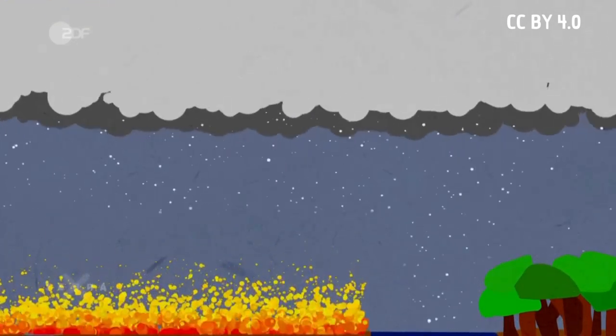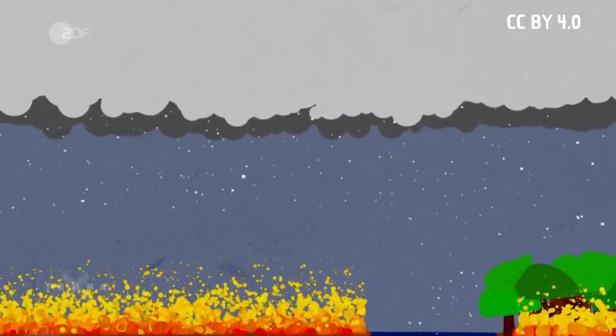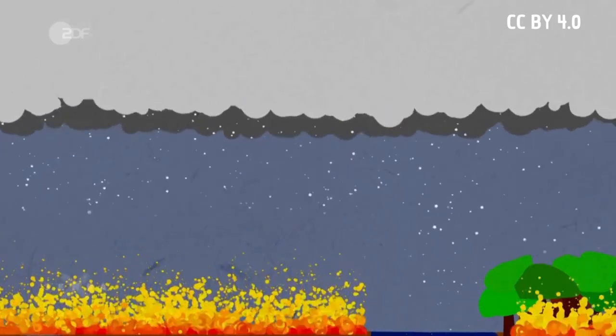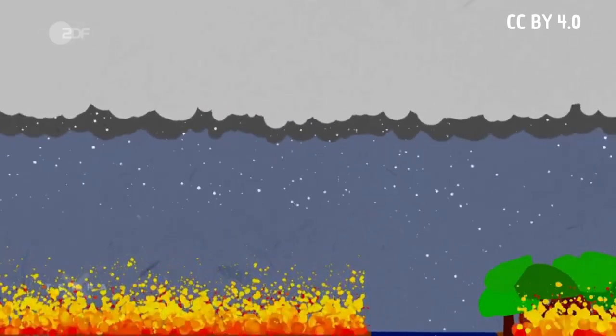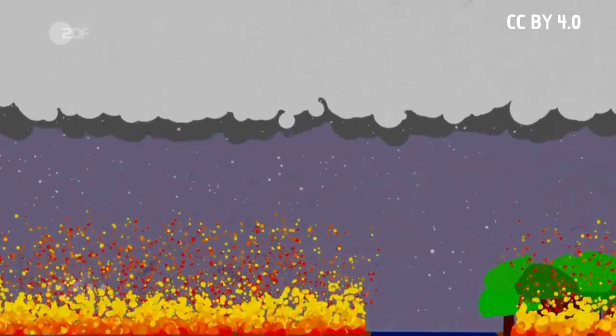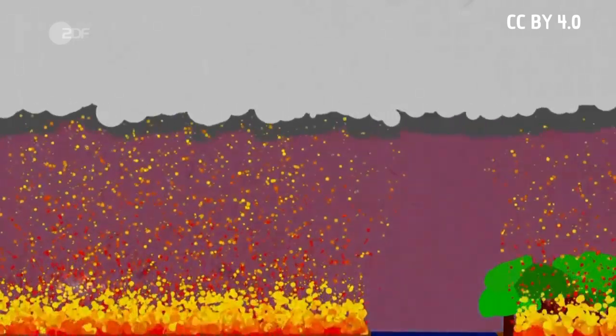This phenomenon, known as the Pyrocumulonimbus cloud, triggers lightning, leading to thunderstorms and adverse weather. The constant updraft produces a chimney effect, birthing a devastating firestorm.